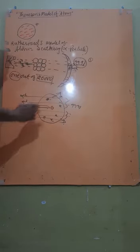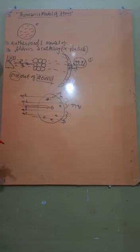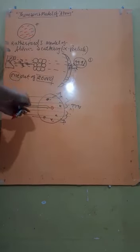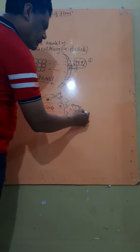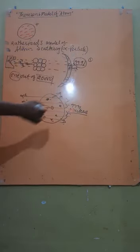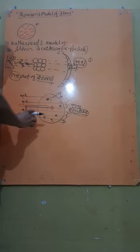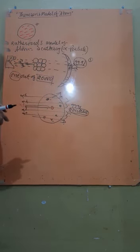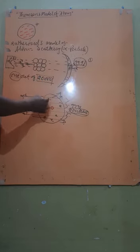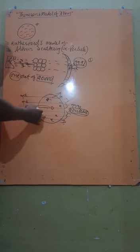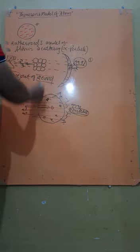Rutherford suggested that it is a nucleus. So this experiment shows the discovery of the nucleus. The nucleus is of dense mass but very, very small volume. And the electrons are located around the nucleus, and the overall atom is spherical in shape. On the basis of this experiment, he cancelled the Thomson model of atom.